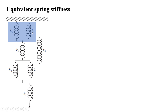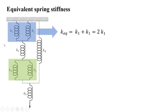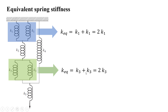First, we'll consider these two springs having stiffness k1 which are in parallel, then these two springs which are again in parallel. The equivalent spring stiffness for this parallel arrangement is k_equivalent = k1 + k1 = 2k1. Similarly, for these two springs in parallel, the equivalent stiffness is k3 + k3 = 2k3.